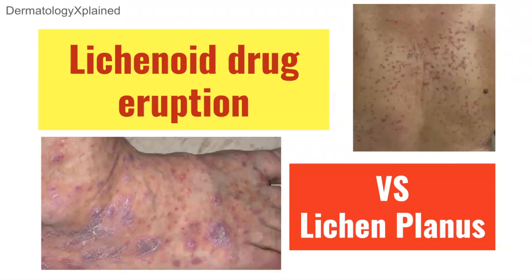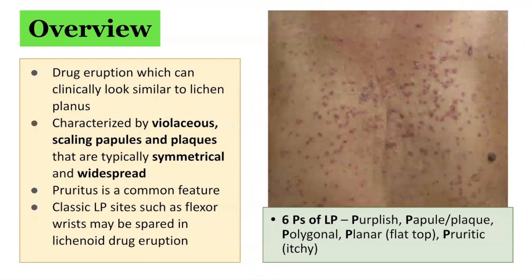Welcome everyone to Dermatology Explained. Today's talk will be looking at lichenoid drug eruptions and how it compares with lichen planus. Lichenoid drug eruption is a drug eruption which can look very clinically similar to lichen planus, another lichenoid condition. If you haven't seen our video on lichen planus, visit our channel — we have a series on lichenoid dermatoses.